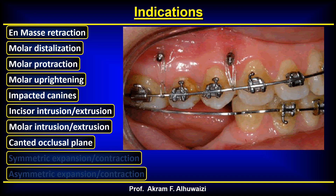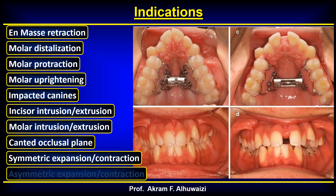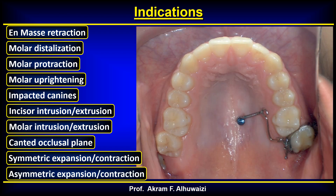Intrusion on one side of the arch is common when you have a canted occlusal plane and want to intrude only one side. TADS also enable symmetrical expansion or contraction, where regular arch expansion relies on the teeth — with about 50% dental and 50% skeletal change — but TADS pads placed inside shift the effect to be much more skeletal and much less dental. Asymmetric expansion or contraction can also be done to correct crossbites, intruding and moving teeth lingually as needed.